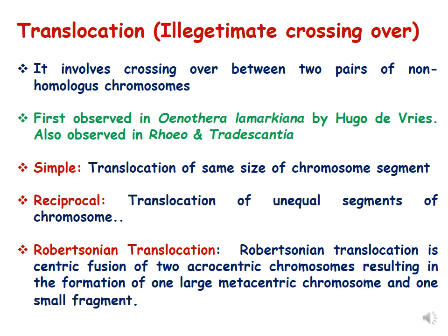Simple translocation happens when equal segments from non-homologous chromosomes get translocated, and reciprocal when unequal segments get translocated. Robertsonian translocation is a special kind of translocation which happens between acrocentric chromosomes. It is the centric fusion of two acrocentric chromosomes, which results in the formation of a very long chromosome and one small fragment which is ultimately lost.